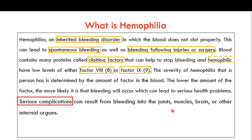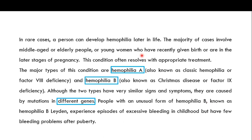The bleeding also depends on the type of organ involved. Serious complications can be expected if bleeding occurs in the joints, muscles, brain, or other internal organs. In rare cases, a person can develop hemophilia later in life — the majority involving middle-aged or elderly people, or young women who have recently given birth or are in later stages of pregnancy. This condition often resolves with appropriate treatment.